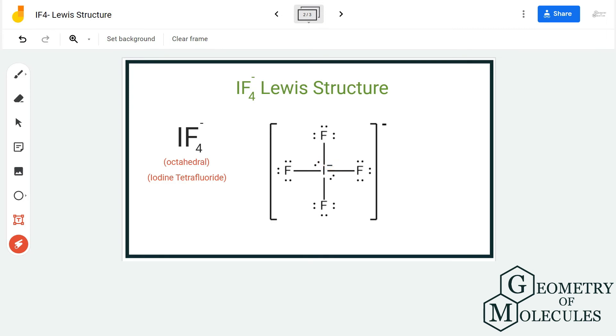So whenever you are writing the Lewis structure for an ion, place brackets, close brackets like this, and mention the charge. If it is accepting electrons it will have a negative charge. If it is giving away electrons it will have a positive charge. Here this is a negatively charged ion, so put it into the brackets and mention its charge.